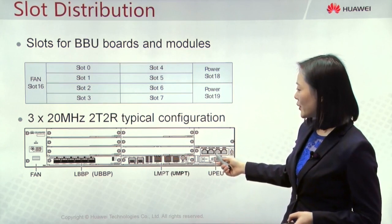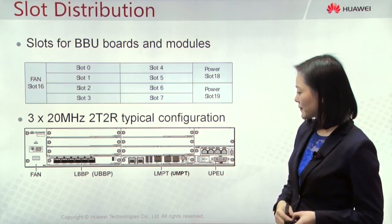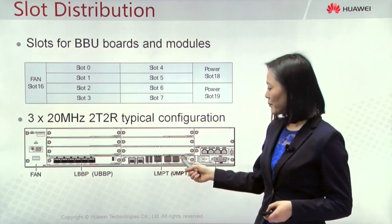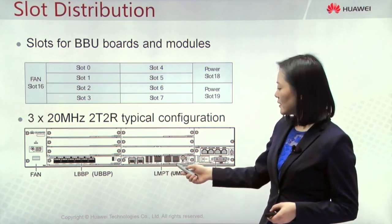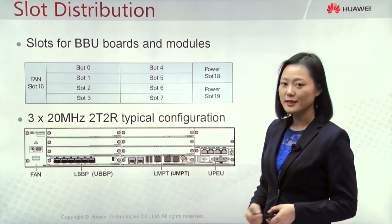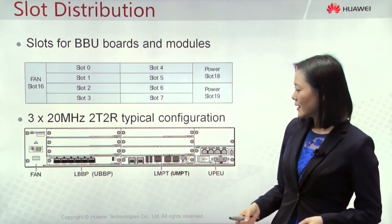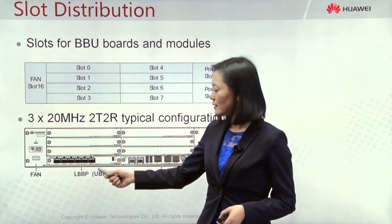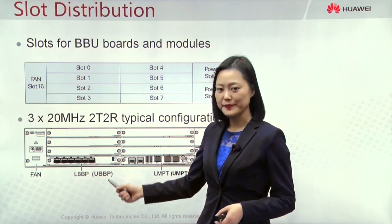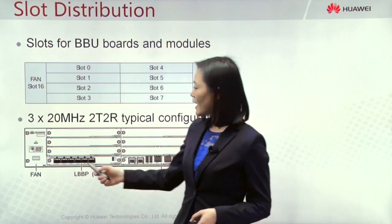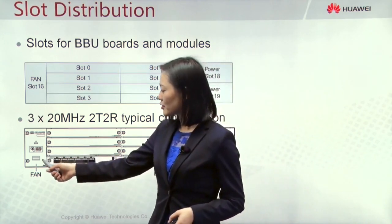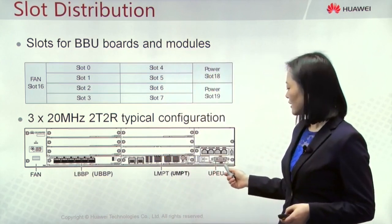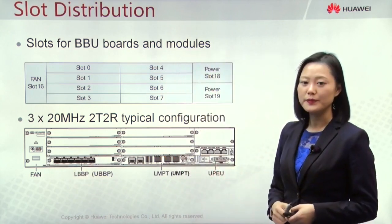Here is a typical LTE site configuration. We need one MPT board — the main processing board — as mandatory, installed in Slot 7 as priority. In Slot 3, configure one BBP board, which can be LBBP or UBBP. On the left side, Slot 16 is for the fan module, and Slot 19 has one UPEU as mandatory.